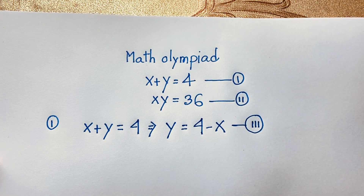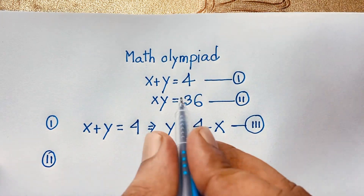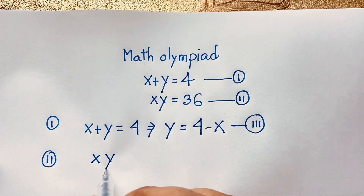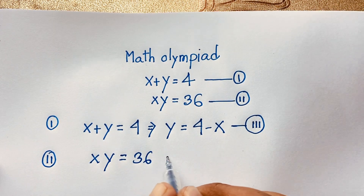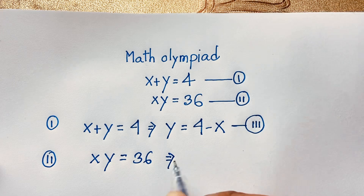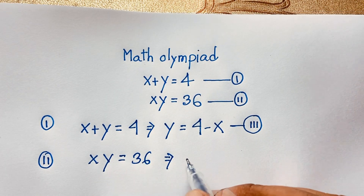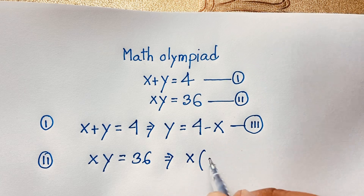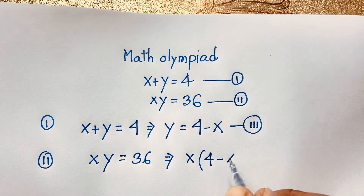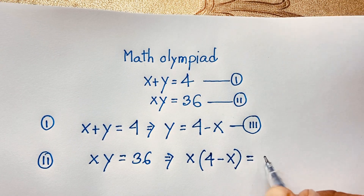We will use y is equal to 4 minus x. And this is our second equation: x times y is equal to 36. Now, at this moment, you can easily substitute x times (4 minus x) is equal to 36.